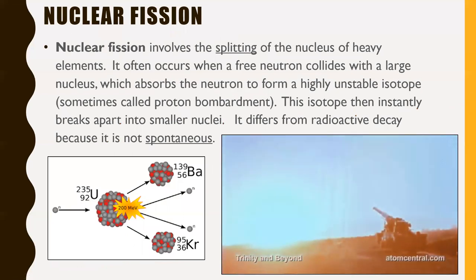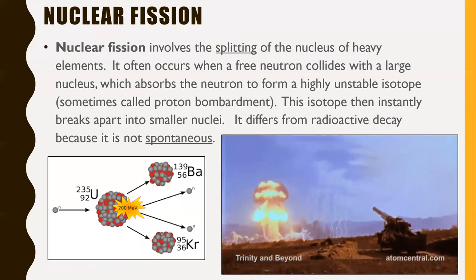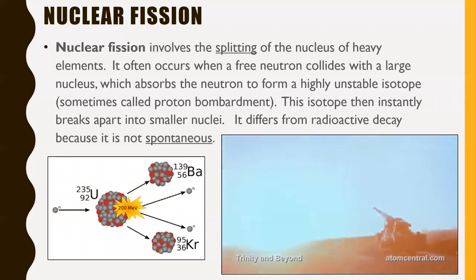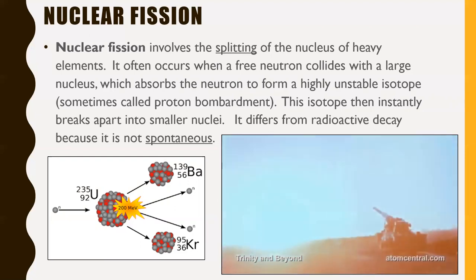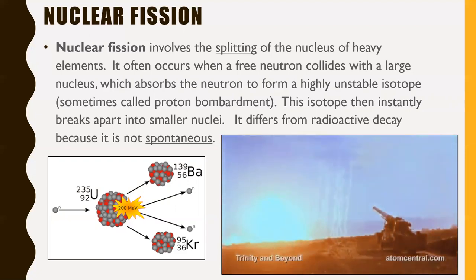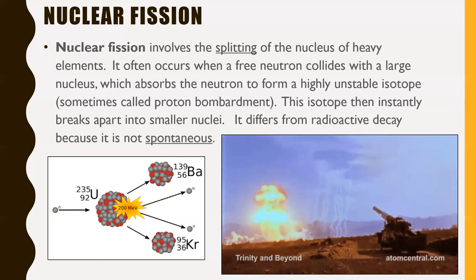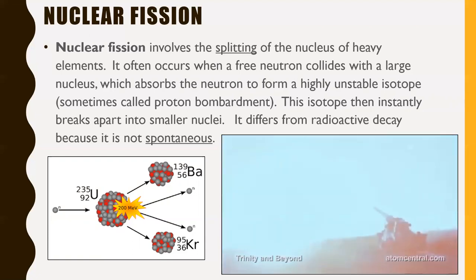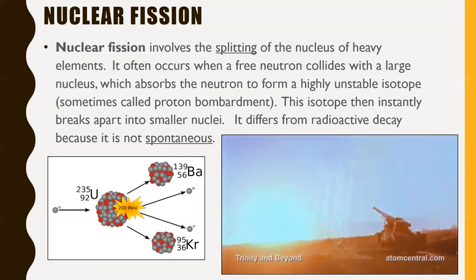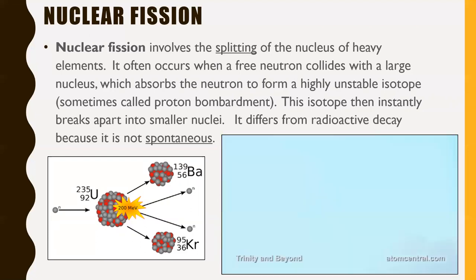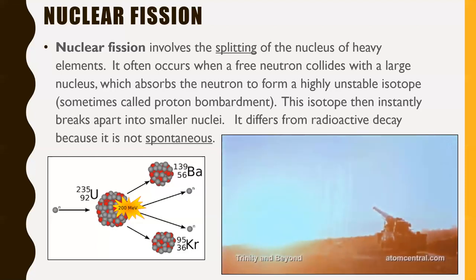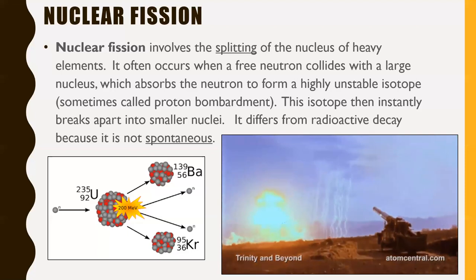Nuclear fission involves the splitting of the nucleus of heavy elements — the elements at the bottom of the periodic table. It often occurs when a free neutron collides with a large nucleus, which absorbs the neutron to form a highly unstable isotope — sometimes called neutron bombardment. This isotope then instantly breaks apart into smaller nuclei. It differs from radioactive decay because it is not spontaneous. Radioactive decay occurs on its own, but nuclear fission has to be triggered by a neutron colliding with a large nucleus.